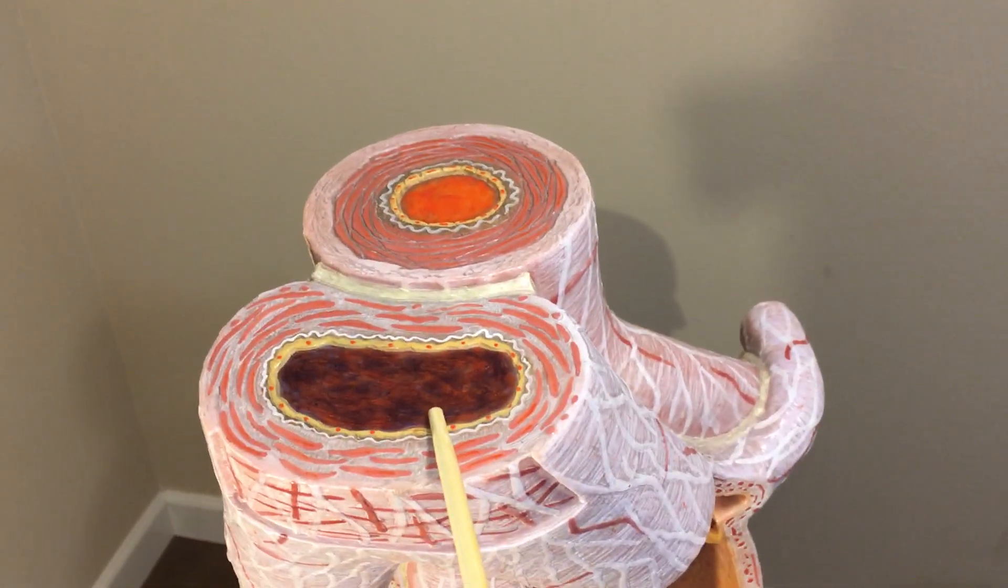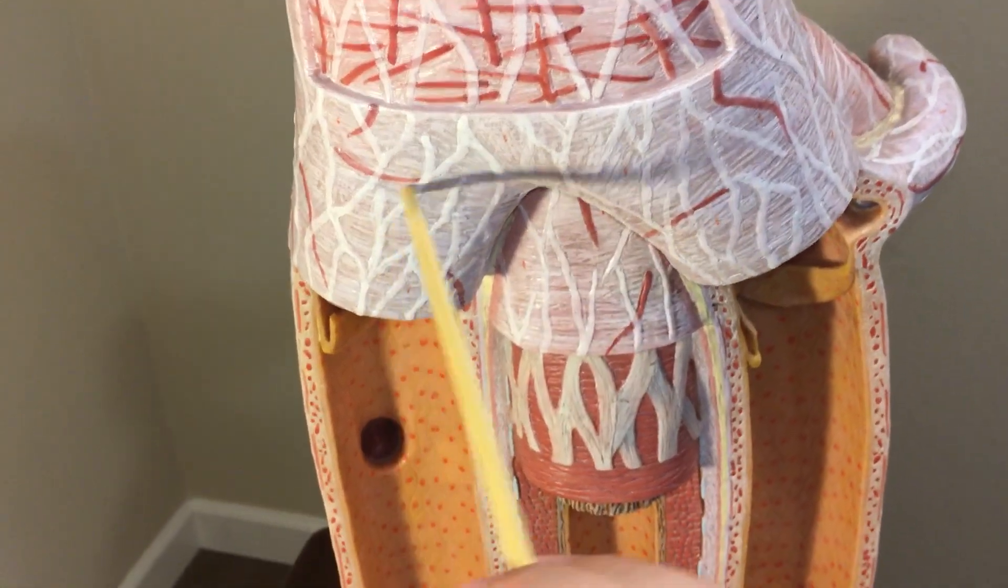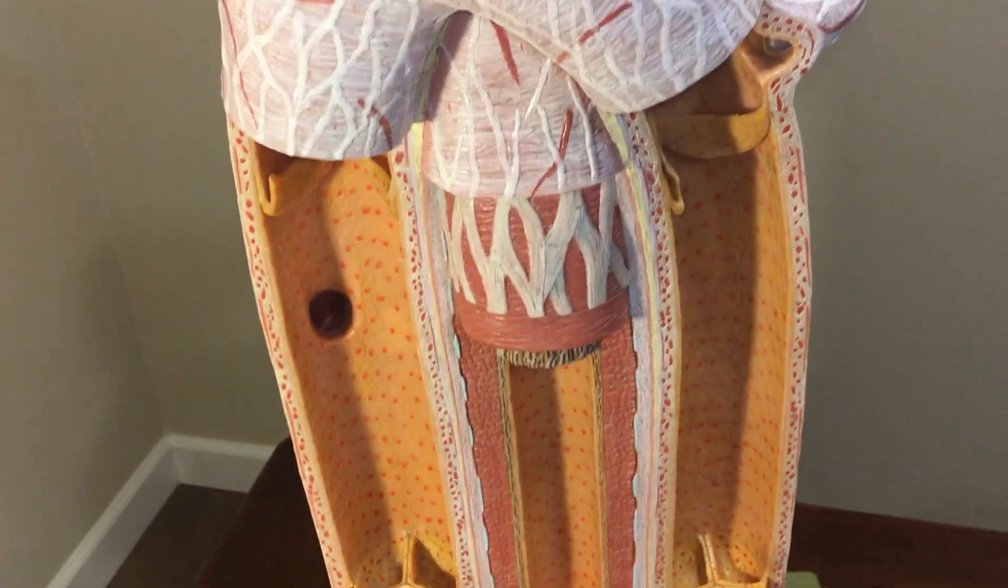So if this is the vein right here, you can see that it's going to branch out into two veins with the artery in the middle.